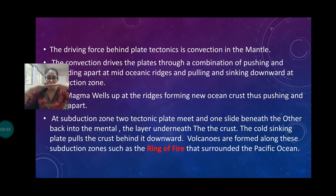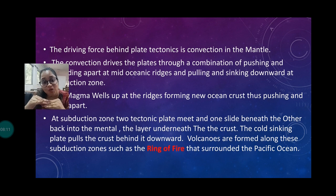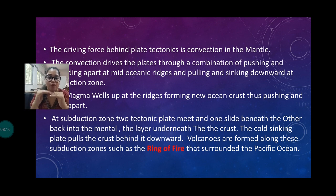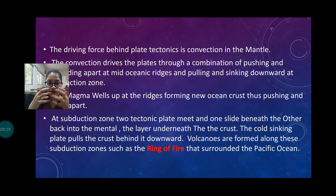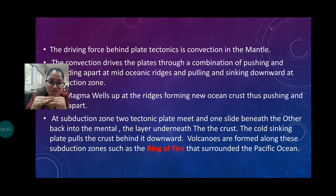Two plates come towards each other; one plate comes down because it is heavy. The heavy one is the oceanic plate. In this boundary, the cold shrinking plates pull the crust downwards. Due to that, volcanoes are formed, and this region is known as the subduction zone.